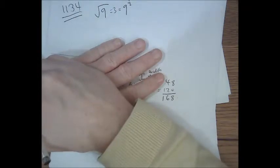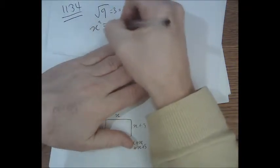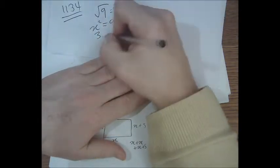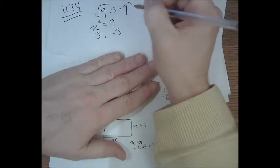There are clearly two answers to this equation, because three fits, but also negative three fits. If you square negative three, you get nine just as much as if you square three.